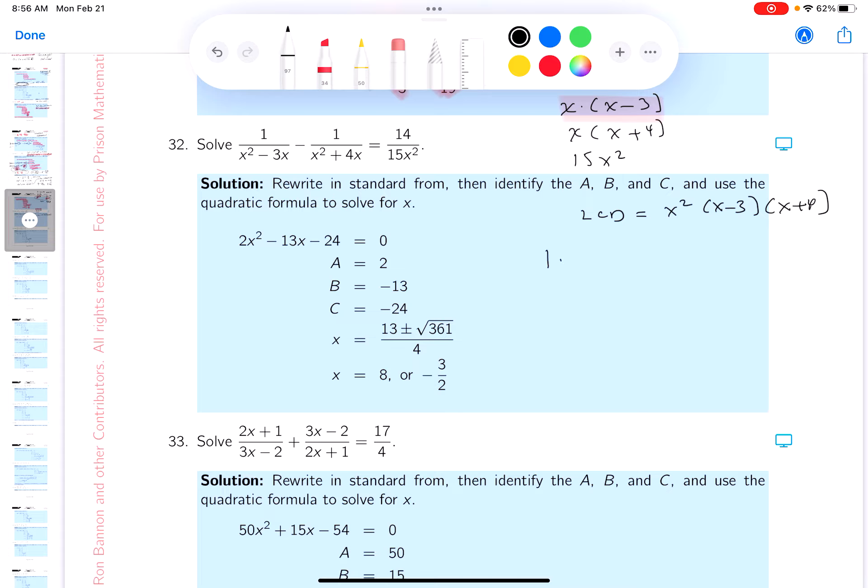So what would you be left off with? Certainly a 1. What cancels off? One of the x's would cancel. x minus 3 would cancel, and you're left with x plus 4. Minus, you certainly get a 1. One of the x's cancel, and the x plus 4 cancels, and you get x minus 3.